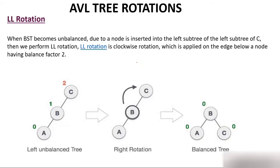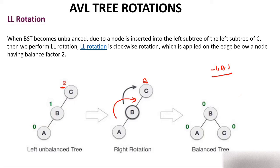For LL rotation: C is inserted first, then B (smaller, goes left), then A (smaller, goes left of B). Balance factor of C becomes plus 2. You perform LL rotation — clockwise rotation at the neck of the node whose balance factor is disturbed. B comes up, C goes right, A stays left. Balance factor of every node is now 0, so the tree is balanced. This is LL rotation — clockwise or right rotation.